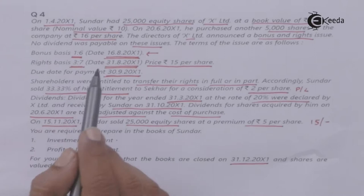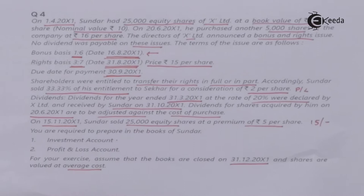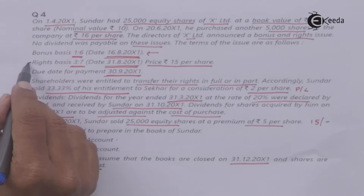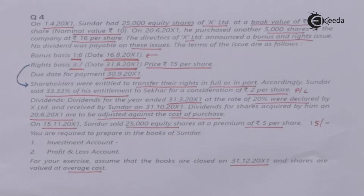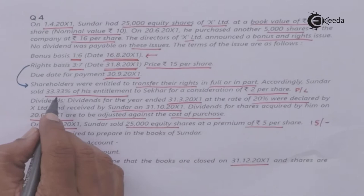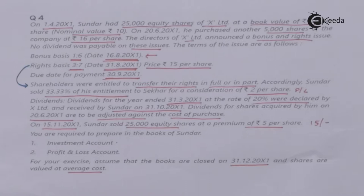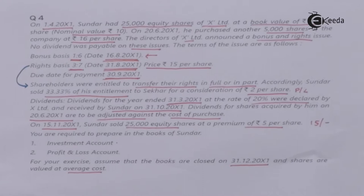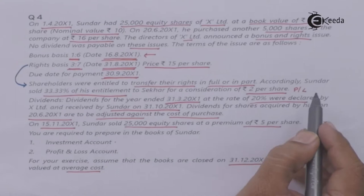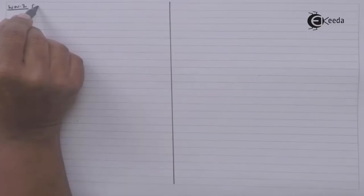Right basis is 3:7, based on 31st August 200X1, and price per share is Rs.15. Shareholders were entitled to transfer their right in full or in part. Accordingly, Sundar sold 33.33% of his entitlement to Shaker for a consideration of Rs.2 per share. We need to first check Sundar's total entitlement, from which 33.33% is being sold. The amount received will go to the P&L account as per AS13. We need to make a working note for right shares.